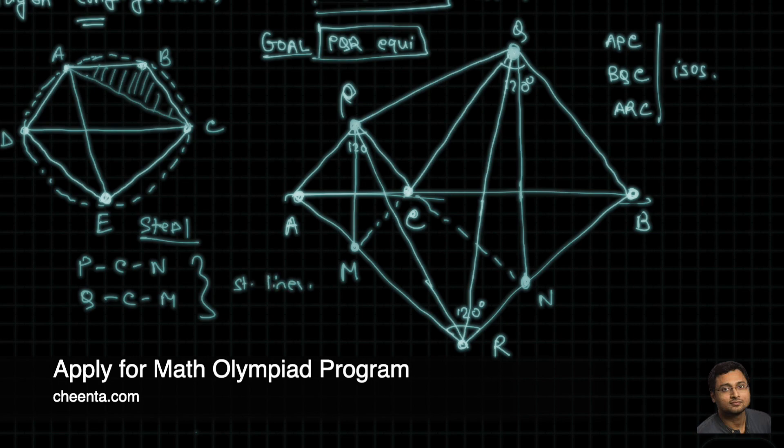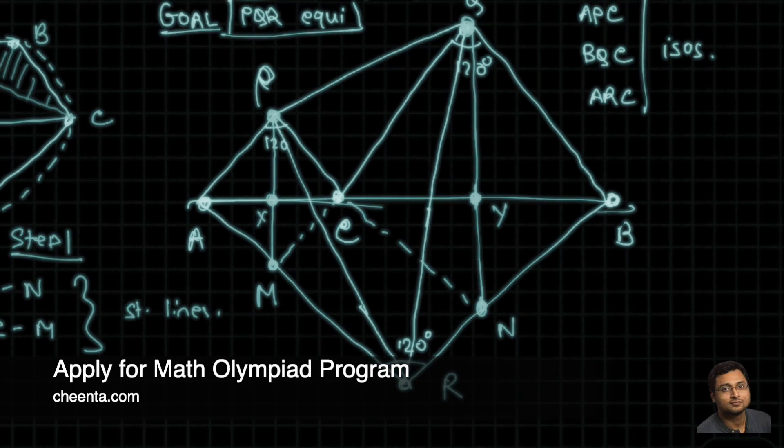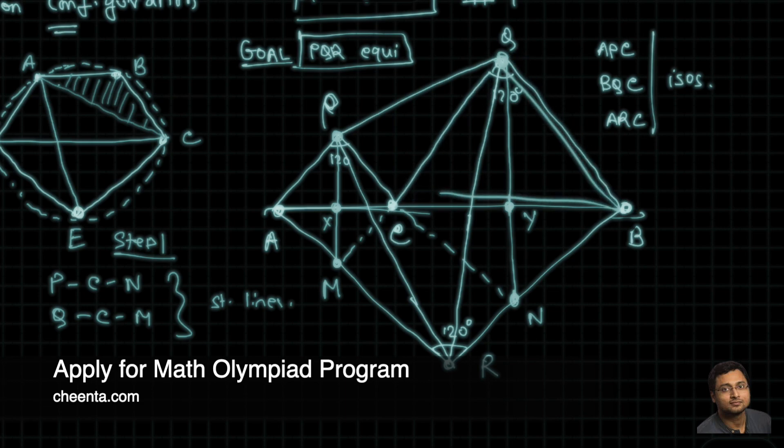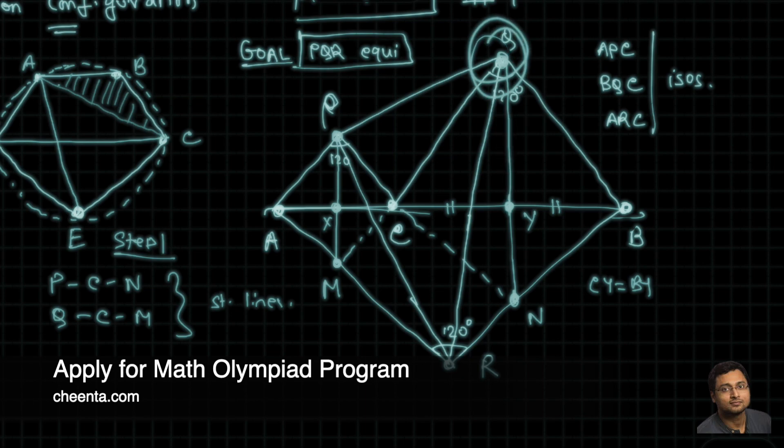So it's quite simple actually to show this because let's suppose these two points are X and Y. I'll sort of sketch one part of the proof. So this is an isosceles triangle. BQC is an isosceles triangle. And QY is perpendicular to the base. So we can say that these two angles are equal. These two sides are equal. CY equals to BY.